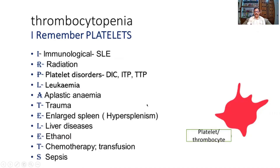Normally a platelet is a cell without a nucleus — no head or tail, as Robbins describes. It is supposed to be very bland and harmless. But when activated, a platelet can play havoc, as we shall see later in our discussion on thrombosis.